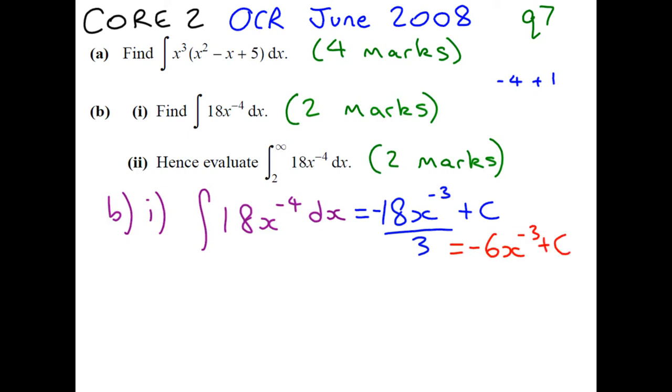Now part 2 follows on from this. The only difference is we have limits. And you notice that our upper limit is infinity. So if you imagine your graph going on forever, you want to sum up the area. You want to find the area beneath the curve that goes on forever.